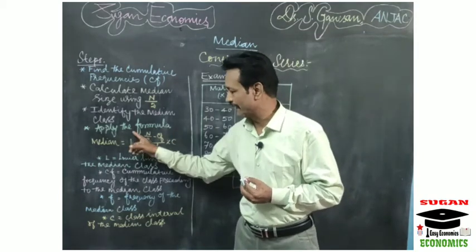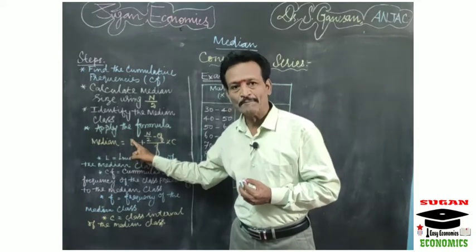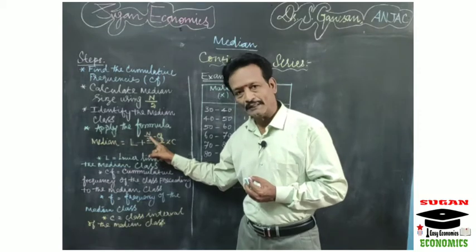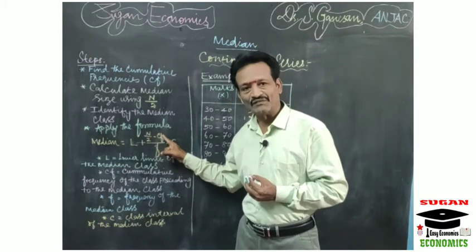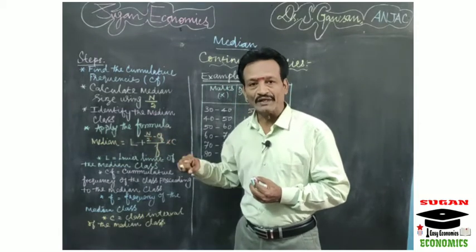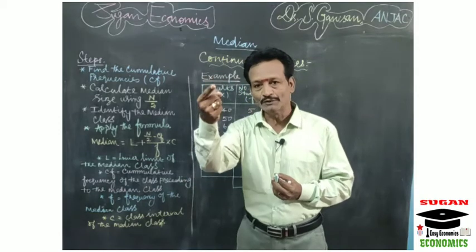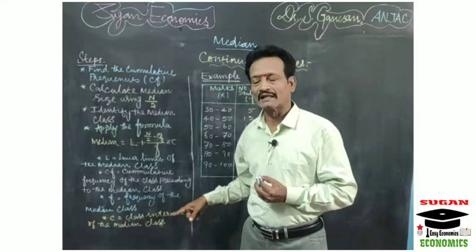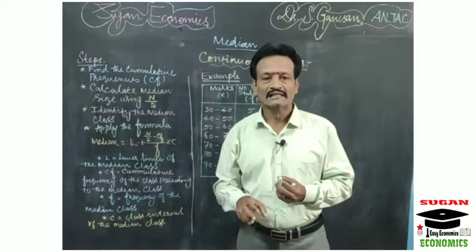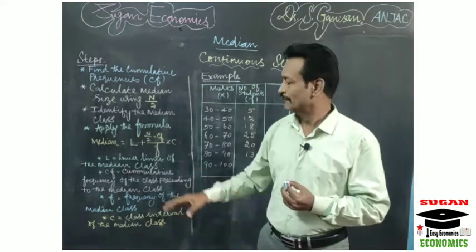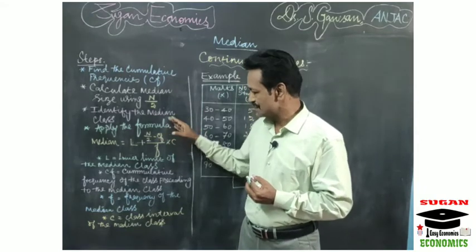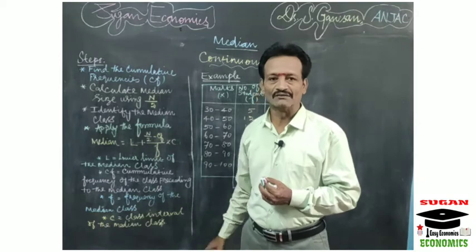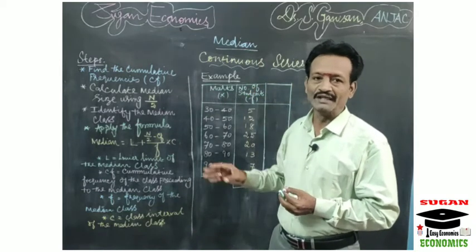To summarize: L is the lower limit of the median class, n by 2 is the median size, Cf is the cumulative frequency of the class preceding the median class, f is the frequency of the median class, and C is the class interval or class limit of the median class. These are all the steps involved in the calculation of median for continuous series.